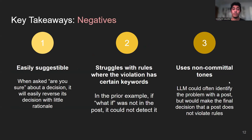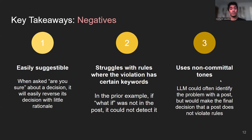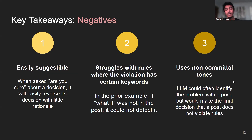We also found some negatives, which were that the LLMs were easily suggestible. Namely, when you ask it if it's sure about a decision, it will easily reverse it and say 'sorry, I got it wrong.' They also struggle with rules where the violation is missing certain keywords — for example, in the prior example of a hypothetical scenario, if the words 'what if' were not in the post, it would not actually be able to detect that as a violation. They also tend to use non-committal tones, so it could detect a lot of problems with the post but eventually conclude that the post does not violate any of the rules, which is wrong.